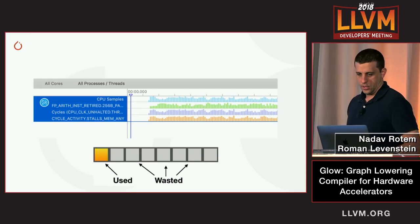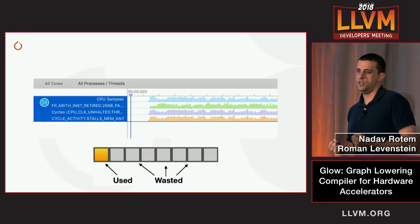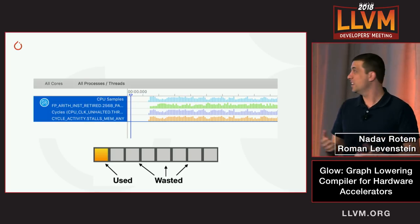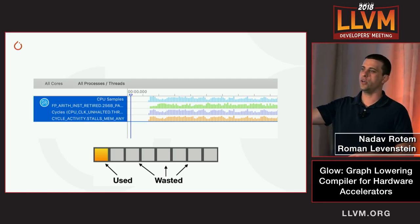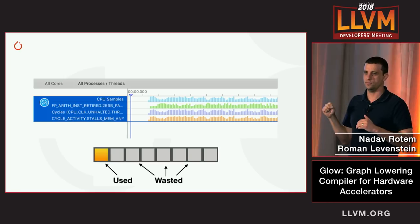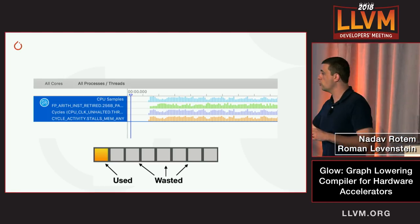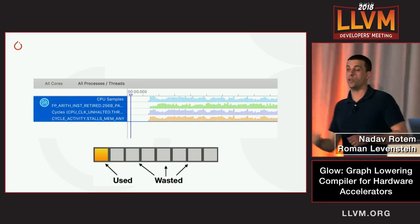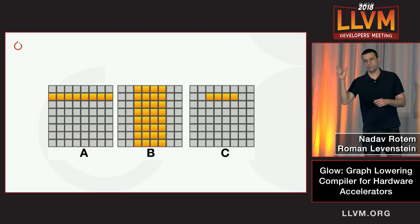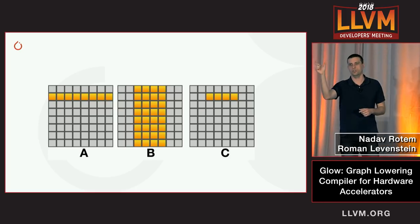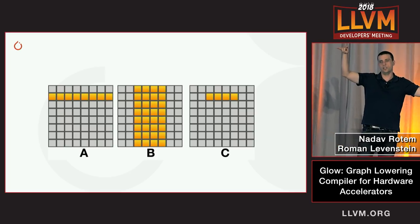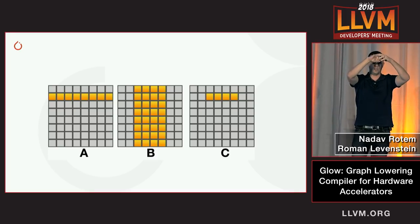The solution is to calculate not one element of matrix C, but a vector of elements. We load one element from matrix A, load a vector of values from matrix B, broadcast the scalar from matrix A, multiply them, and save the results to vector C. However, this approach gives at most 50% utilization on the CPU because you have two memory operations — one load from matrix A and one load from matrix B — for every arithmetic operation.